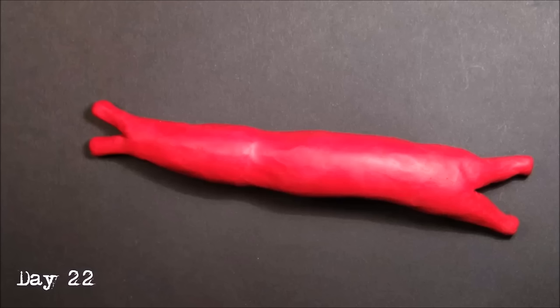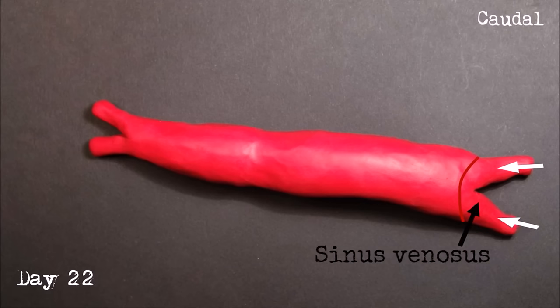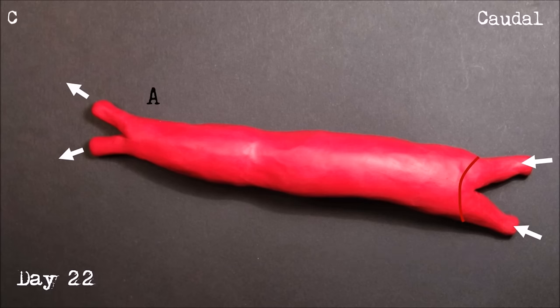We're going to start at day 22 of development. By this point the heart tube is formed, and as you can see it is a relatively basic structure. Blood from the yolk sac, the placenta and the body of the embryo enters the sinus venosus at the caudal end of the heart tube and passes out through the aortic roots at the cranial end.